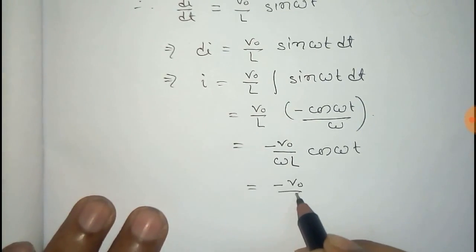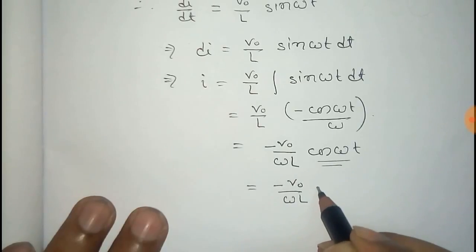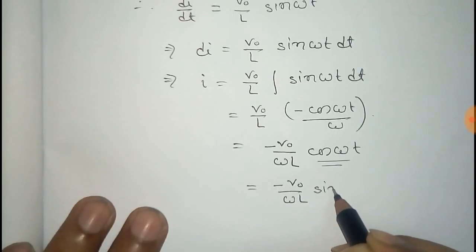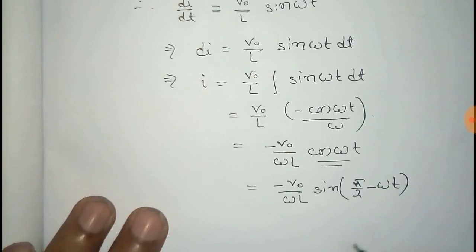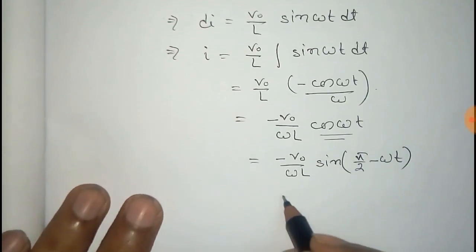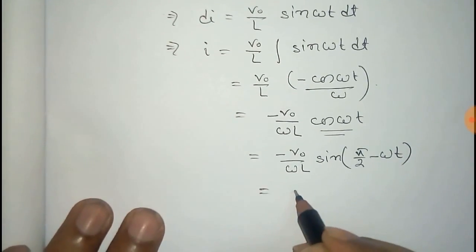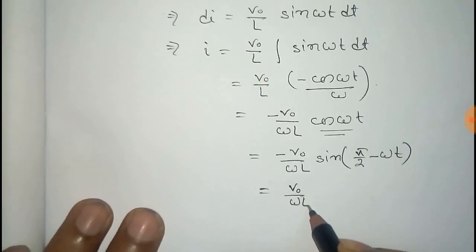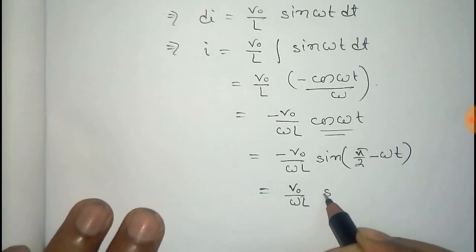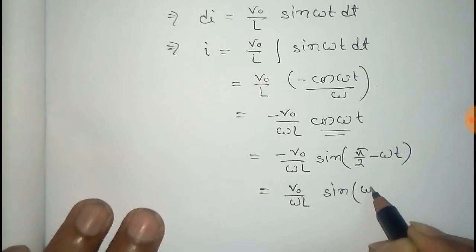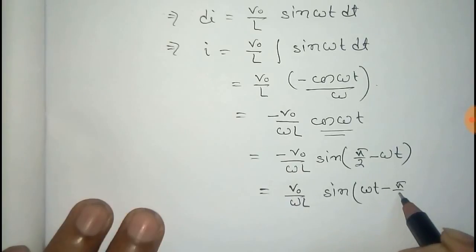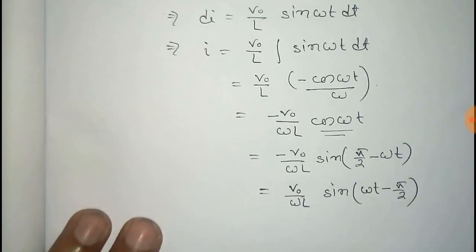This can be written as minus V naught by omega L cosine omega t. Here V naught by omega L is the peak value of current, and cosine omega t can be written as sine of (90 minus omega t). Putting the negative sign in, this becomes sine of (omega t minus pi by 2).